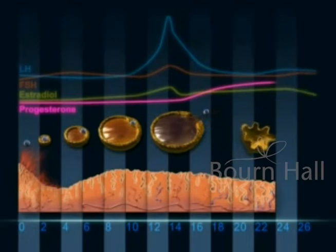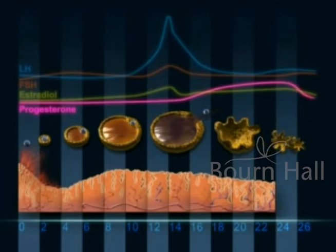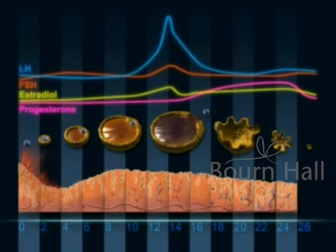If there is no implantation, the corpus luteum degenerates with reduced production of progesterone, and the endometrium starts to shed the uterine cavity lining, resulting in bleeding that is menstruation.